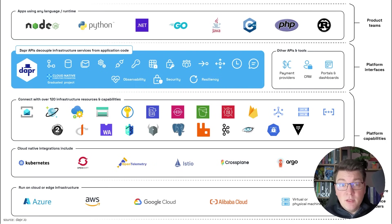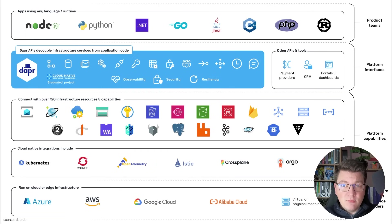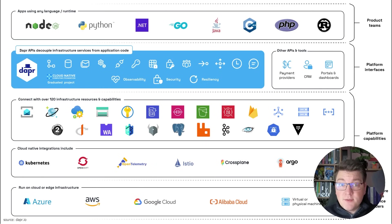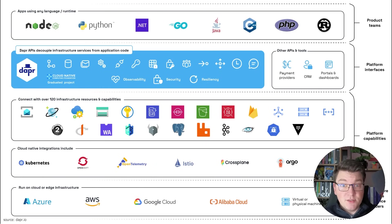DAPR has many built-in APIs called building blocks. The most common ones are the service invocation building block, the storage building block, messaging, workflows, and job scheduling. It also comes with built-in support for observability, security, and resilience.